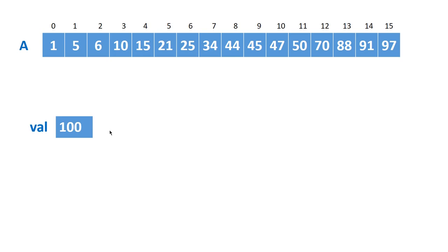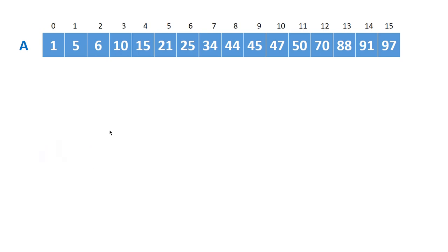It's a waste of time. Similarly, if we want to find -10, we'd do the sequential search again. Even if the array is sorted, we can't always start from the beginning or end — it's not a good solution. For example, searching for 43, which isn't in the array: you compare 1, 5, 6, 10, 15, 21, 25, 34, then reach 44 and conclude 43 isn't there. This motivates a new method.